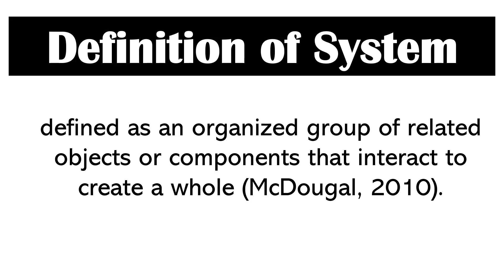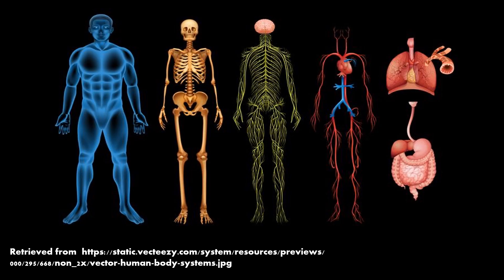A system is defined as an organized group of related objects or components that interact to create a whole. An example of a system that we can all relate to is our body systems.